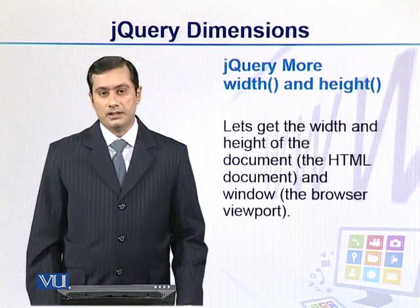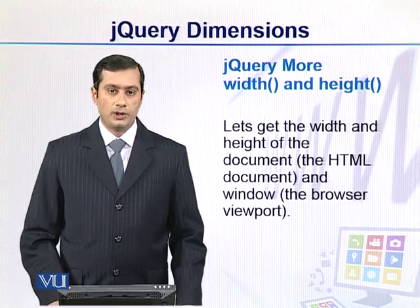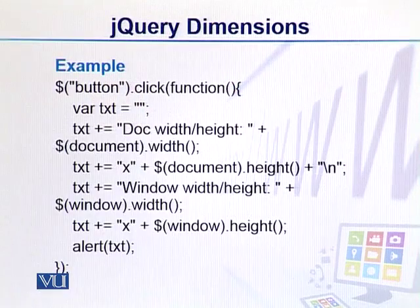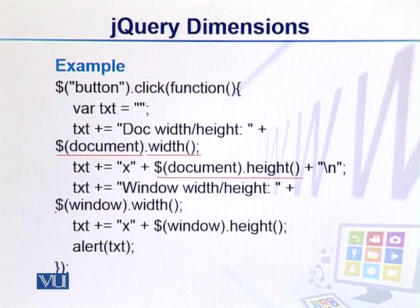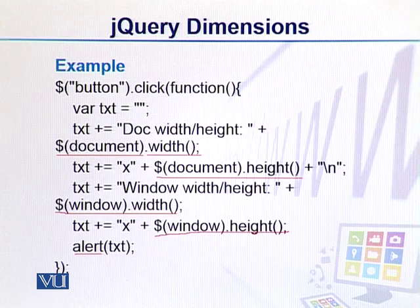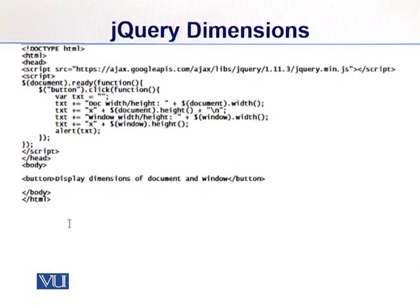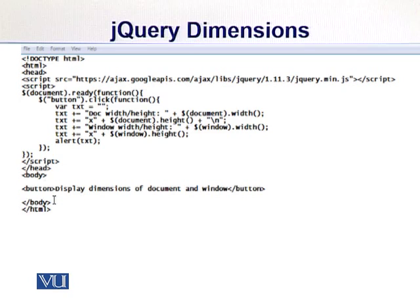Let's look into an example in which we can get height and width. We have code here — we have elements whose width and height we get and display using addText, and the width and height are then alerted. Let's see this working in the environment.